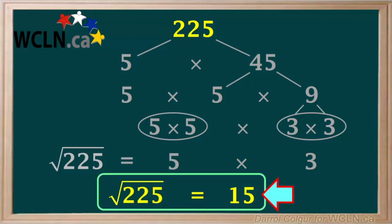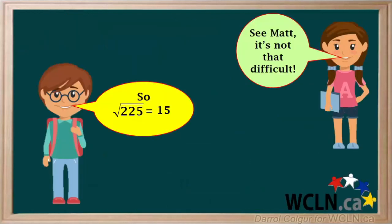So we've used this method of prime factorization to find that the square root of 225 is 15. So with Liz's help,